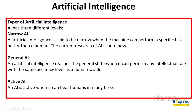Active AI is a future state and also a dangerous one. We are supposed to graduate from narrow to general to active AI, but we must keep our machines under control. AI is considered active when it can beat humans in many tasks.